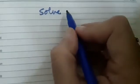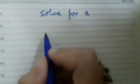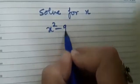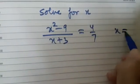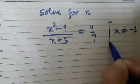Let us solve this equation for x. It is given: x squared minus 9 upon x plus 3 equals 4 upon 7, where x is not equal to minus 3.